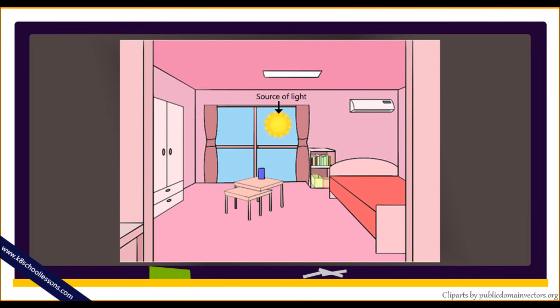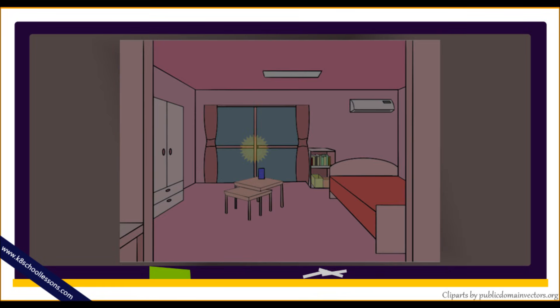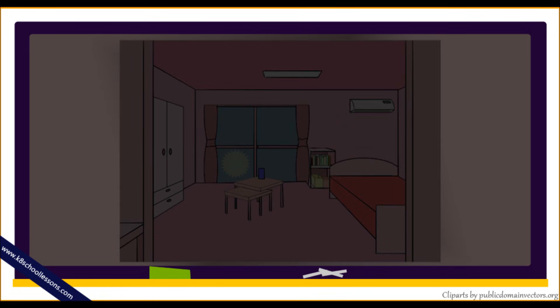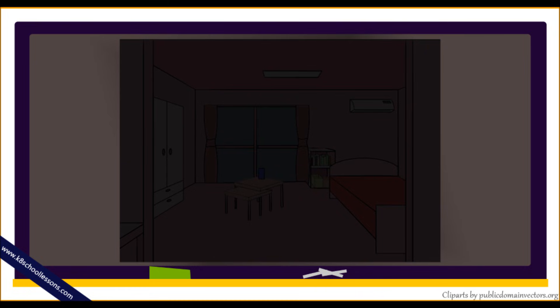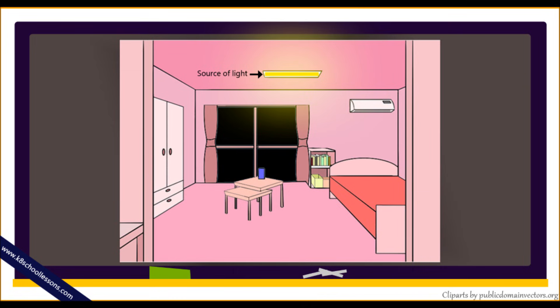Now look at this bedroom. What do you see? A bed, bookshelf, tables, wardrobe, aircon, etc. During the daytime you can see these things, thanks to the sunlight. But when it gets darker and night time arrives, you cannot see the things in the bedroom unless you turn the lights on. If the bed, bookshelf, tables, wardrobe, and aircon emitted their own light, you would not need to turn the light on to see them in the dark. But they don't emit light, so you cannot see them in the dark. Therefore, things like the bed, bookshelf, tables, wardrobe, aircon, etc. are non-luminous objects.